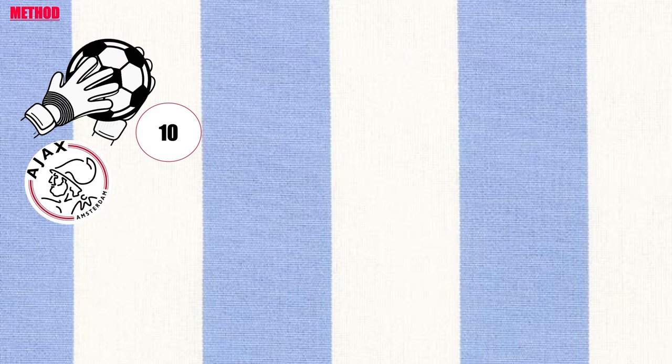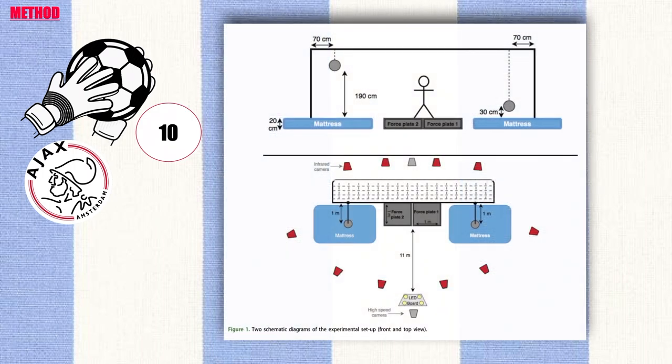Data collection and pre-processing: For each participant, two dives were measured for two heights at both sides of the goal, for a total of eight dives per participant with two minutes recovery time between dives. The visual stimulus was produced by a lead board placed at the penalty spot, consisting of four lead lamps indicating the side and height of the ball to save.